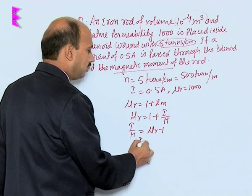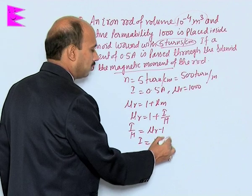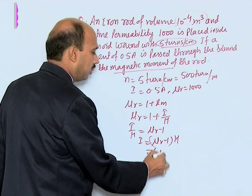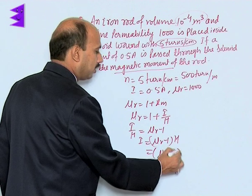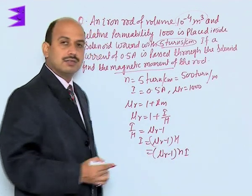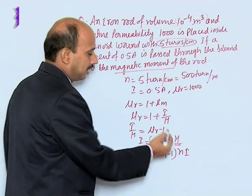So I is equal to mu r minus 1 into H, and that is your mu r minus 1 into nI, that is the magnetizing intensity.